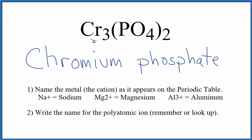But we said chromium is a transition metal. Because of that, we need to really look at what it's bonded to, to understand its ionic charge, and then we have to write that in the name using Roman numerals and parentheses. So let's do that.